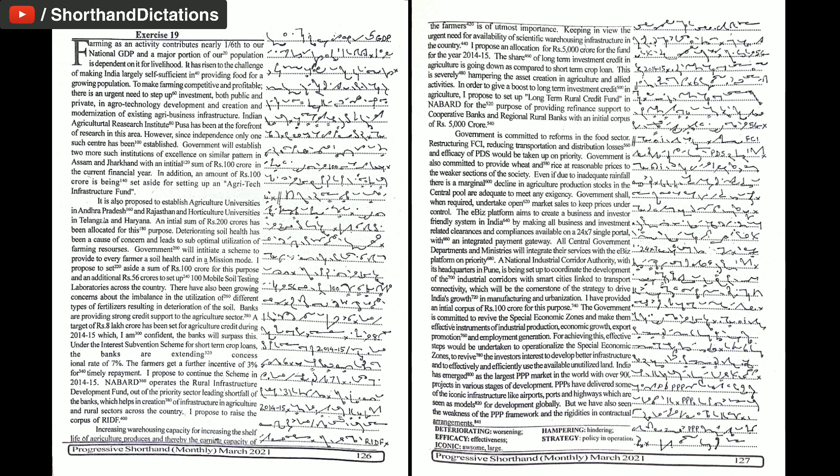Banks are providing strong credit support to the agriculture sector. A target of Rs. 8 lakh crore has been set for agriculture credit during 2014-15 which I am confident the banks will surpass. Under the interest subvention scheme for short-term crop loans, the banks are extending concessional rate of 7%.